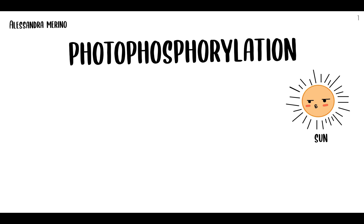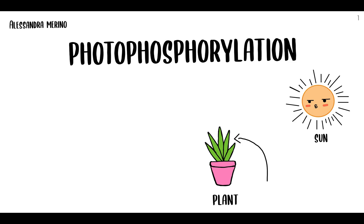Once plants absorb light energy from the sun through chlorophylls, they begin to establish an electrochemical gradient that is necessary for photophosphorylation. This is one of the first stages in photosynthesis and it involves light-dependent reactions. It's also useful to know that the light-absorbing pigments along with other proteins create photosystems, and there are two types of photosystems.